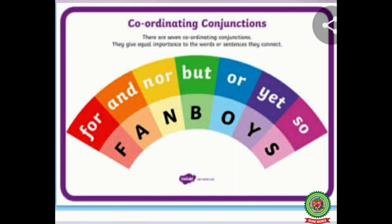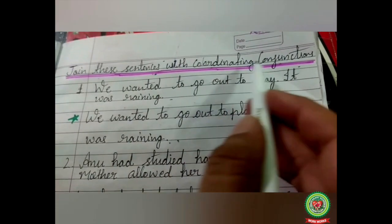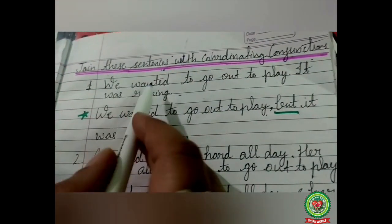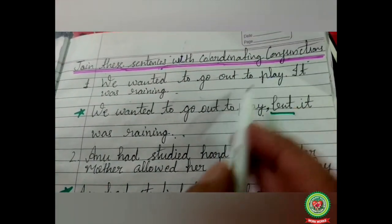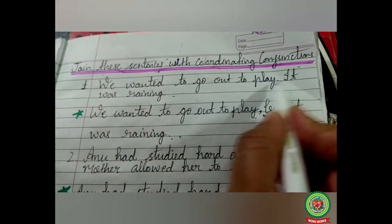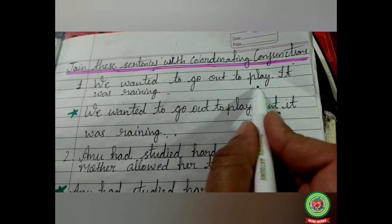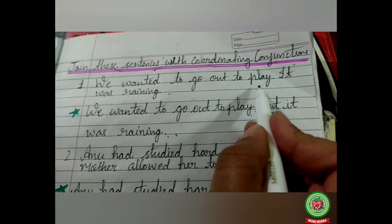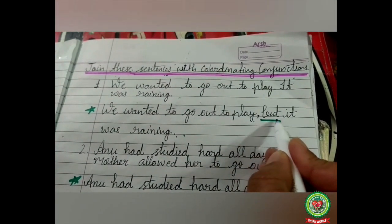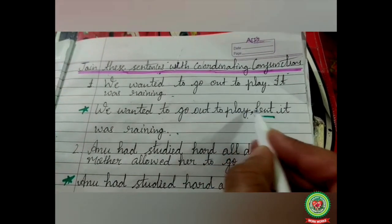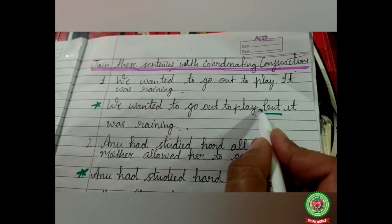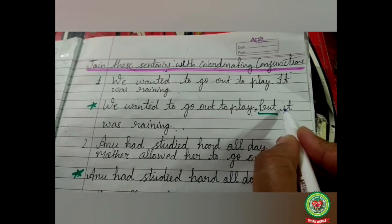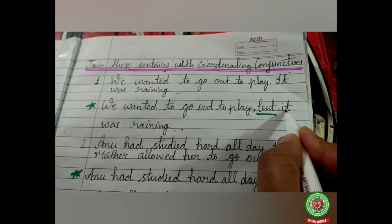We have studied all the coordinating conjunctions. Now we will solve an exercise. Join these sentences with coordinating conjunctions. Number one: 'We wanted to go out to play. It was raining.' There is a contrast here, so we fill in 'but.' Answer: 'We wanted to go out to play, but it was raining.' Remember to put a comma before the conjunction and keep the first letter after the conjunction lowercase.